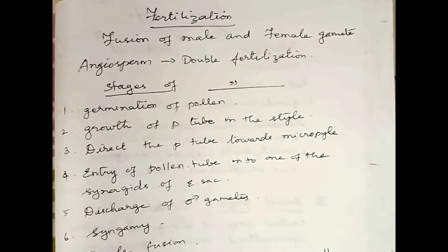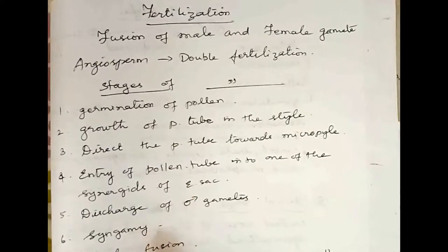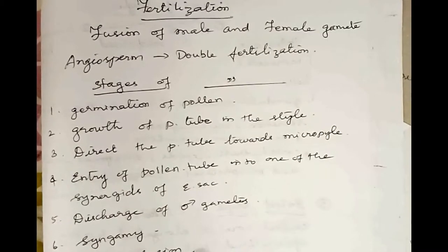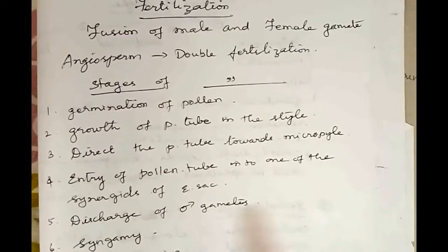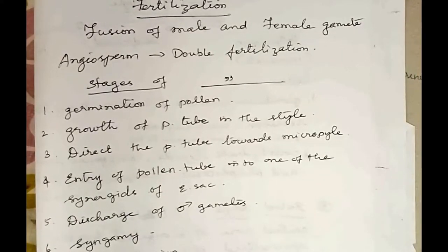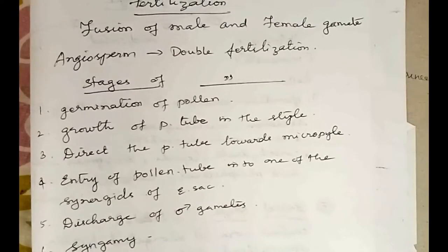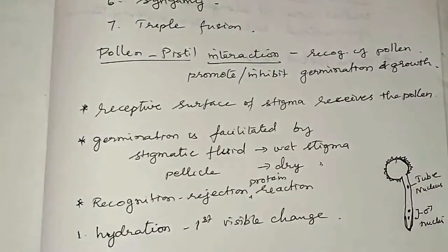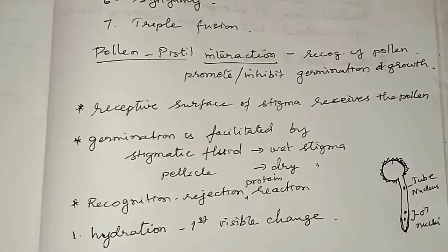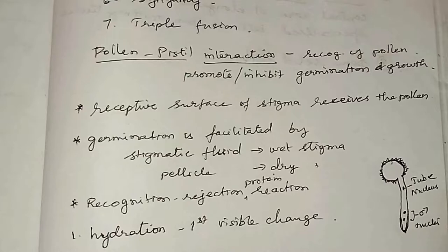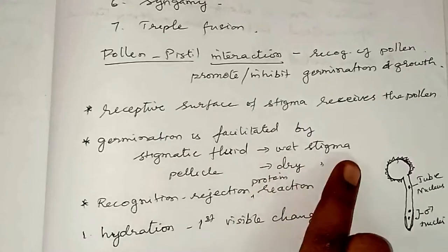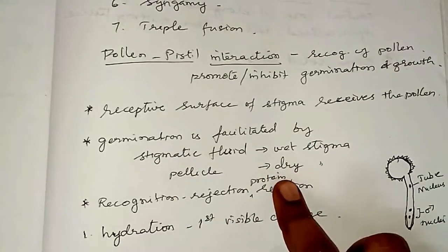Throughout these stages, pollen-pistil interaction takes place. This is a dynamic process involving recognition of the pollen either to promote or inhibit its germination and growth into the style. In nature, a variety of pollen may fall on the receptive stigma, but not all germinate. Only compatible pollen germinates to form the tube, facilitated by stigmatic fluid in wet stigmas and pellicle in dry stigmas.